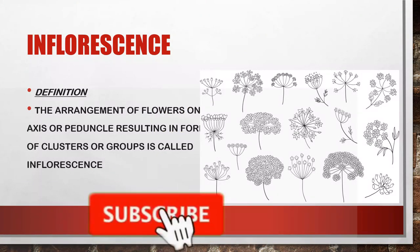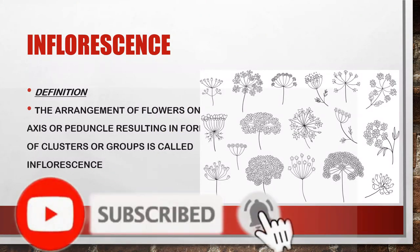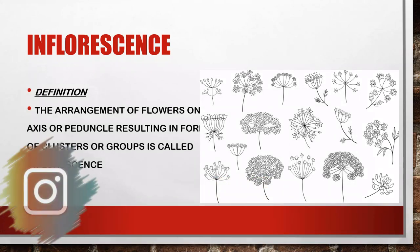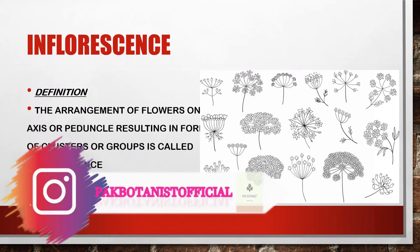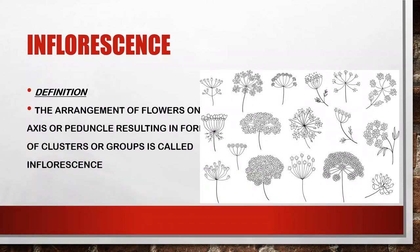First of all, the definition — what is inflorescence? Inflorescence is the arrangement of flowers on the axis or the peduncle, resulting in clusters or groups of flowers. Inflorescence involves the arrangement of flowers on the peduncle, which is the base on which flowers are arranged and attached to the axis.